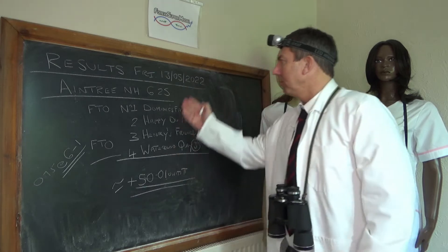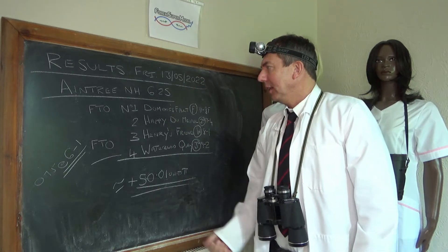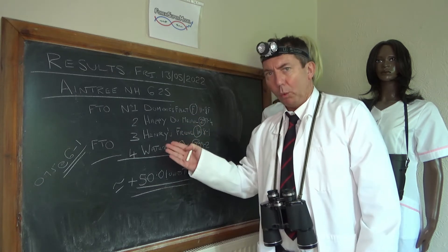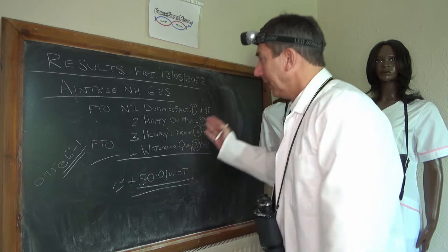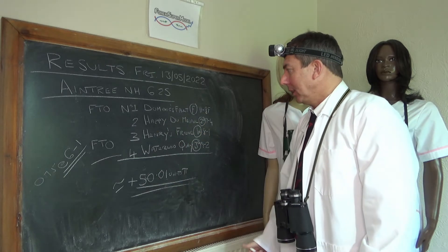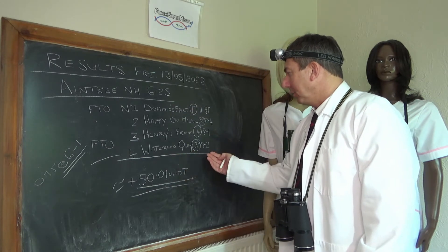Let's look at yesterday's results for Friday the 13th. We've got Aintree on the National Hunt at 6.25. Four horses in that race and we had a go at one unfortunately. There were two FTOs, first time outers, and we were on this number four Waterloo Key which came third at 92.